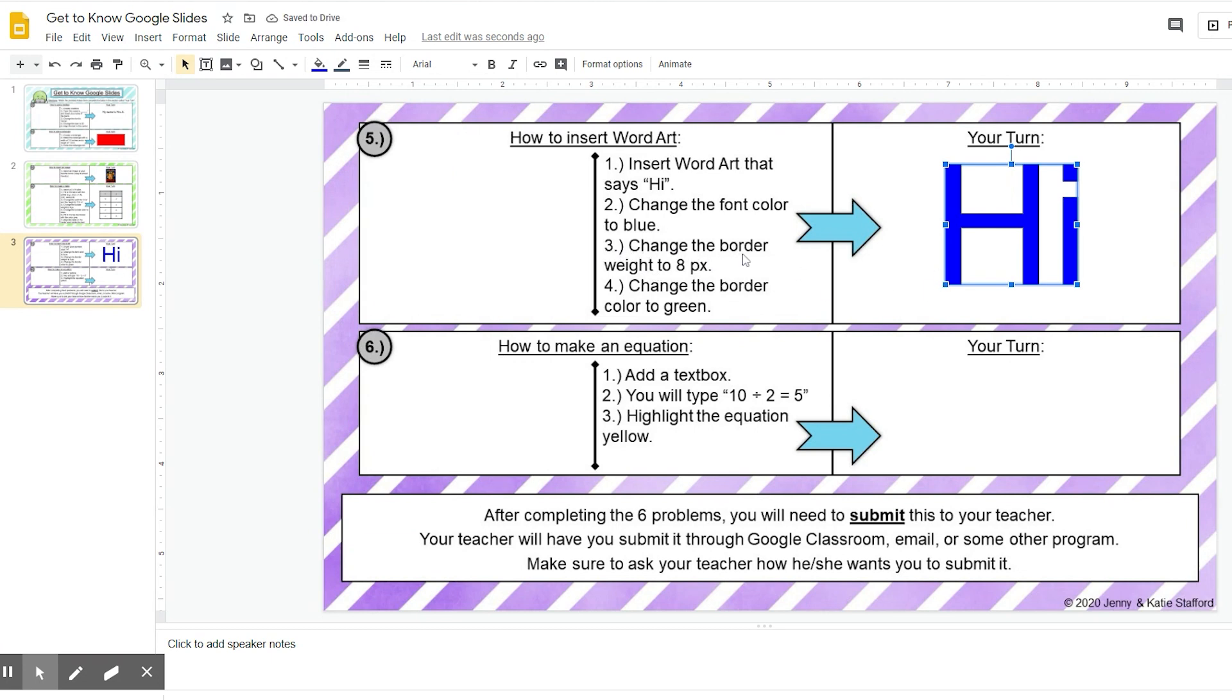Step three, change the border weight to eight PX. This one's going to be really thick. We did, oops, we did a four earlier. Now we're going to do eight. So underneath the border weight, I'll go to eight PX. You can see it made it really thick to where I can see that border.